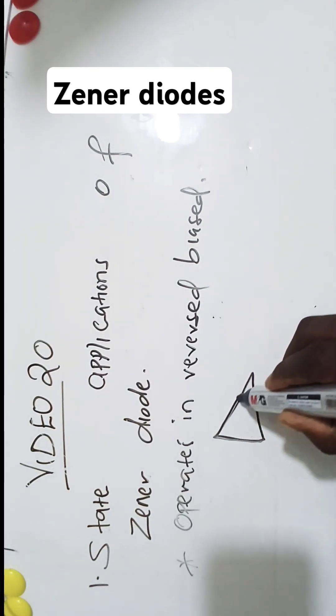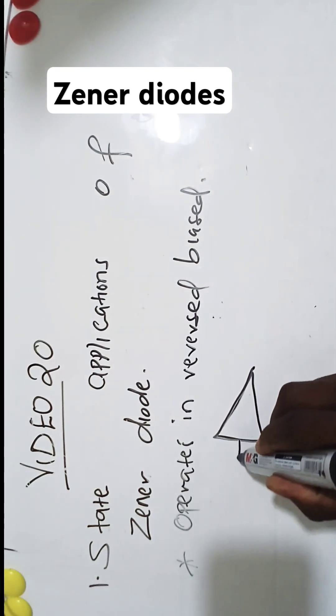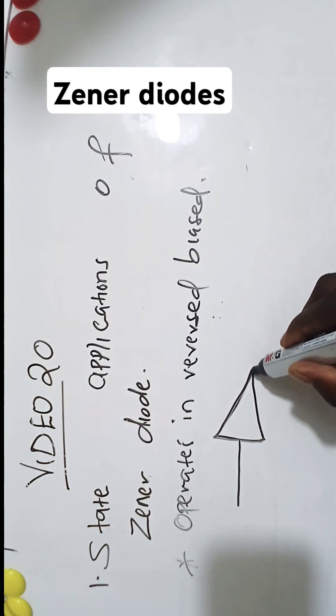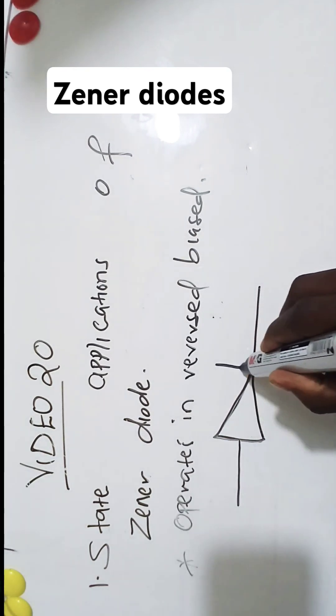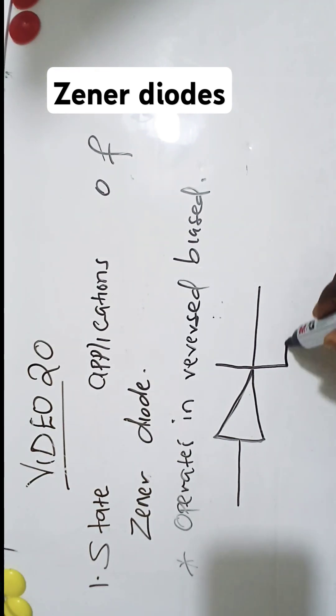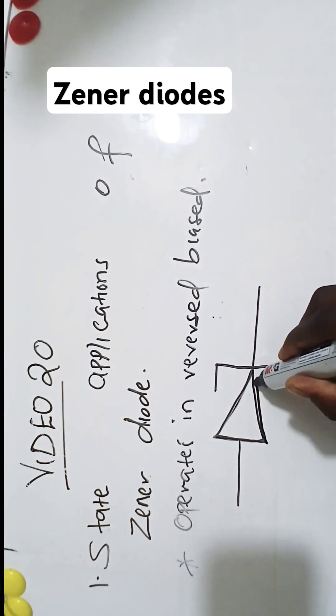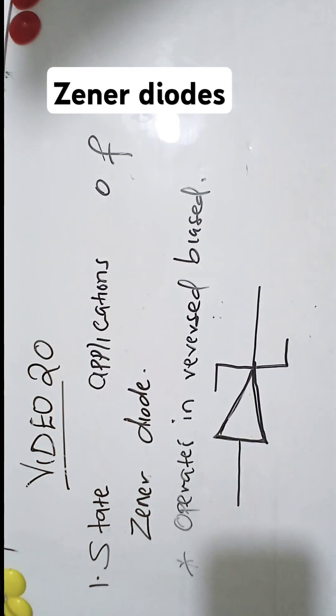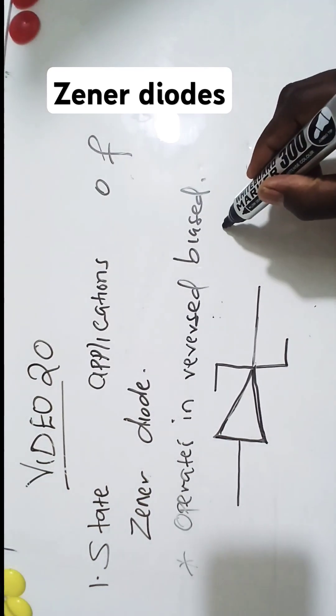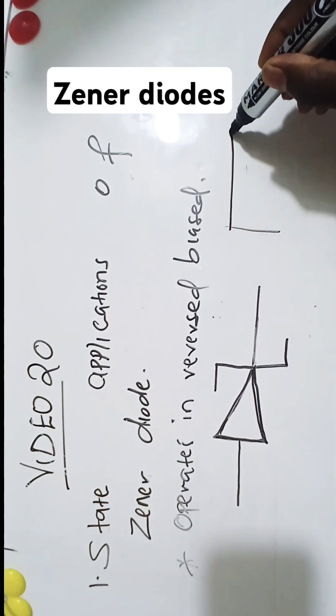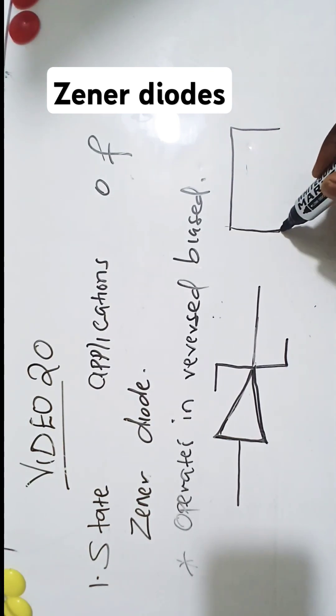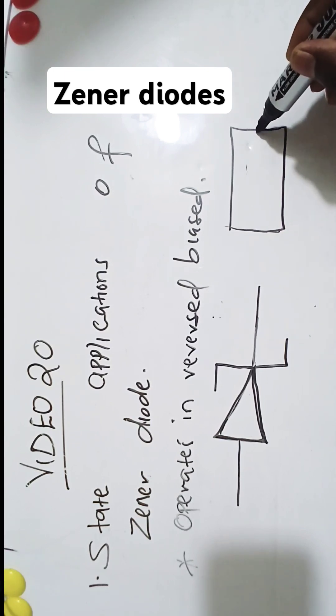The symbol of Zener diode. This is simple. As you know, a diode can be drawn in this way. This is basically how you can see the diode physically.